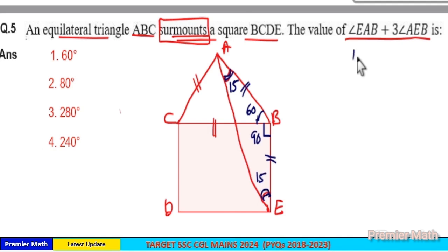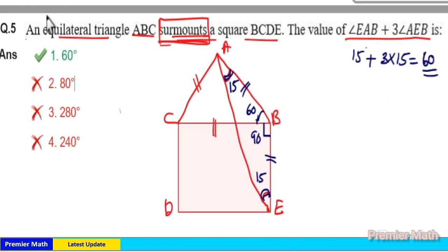Now angle EAB equals 15 degrees, and three times angle AEB is 3 times 15, which is 45. So 45 plus 15 equals 60 degrees. Option 1 is the answer.